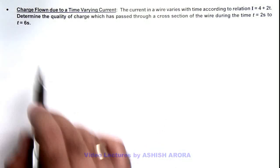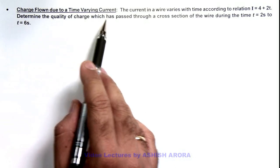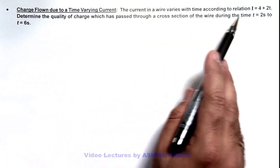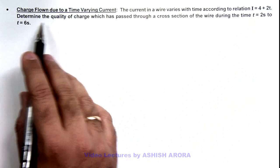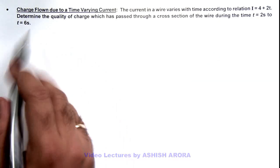In this illustration we'll study about the charge flown due to a time varying current. Here we are given that the current in a wire varies with time according to the relation i = 4 + 2t. We are required to determine the quantity of charge which is passed through a cross section of wire during 2 seconds to 6 seconds.